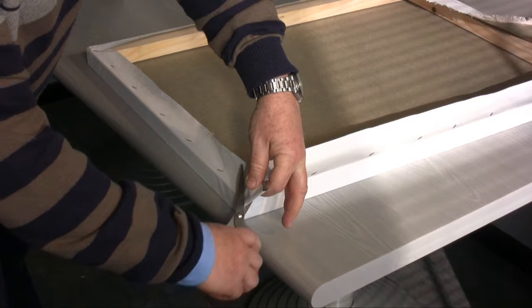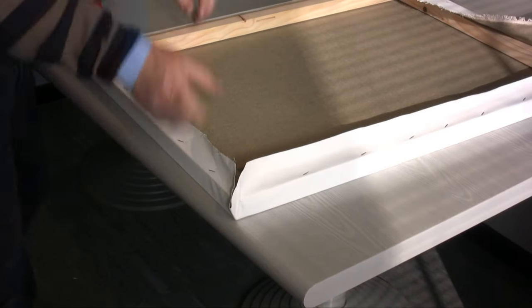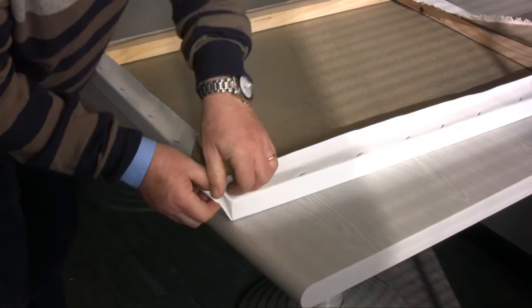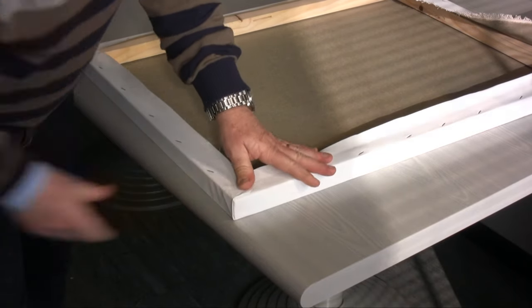The corners of the stretcher frame are then completed manually by cutting the excess canvas and applying a couple of staples after having folded the corners canvas.